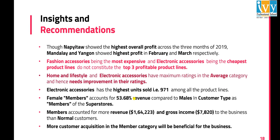From the insights and recommendations: Fashion Accessories is the most expensive product line and Electronic Accessories is the cheapest, yet neither constitutes the top three profitable product lines. Home and Lifestyle and Electronic Accessories have maximum ratings in the average categories and should improve their ratings. Since members brought in more revenue and gross income than normal customers, more customer acquisition in the member category will be beneficial.